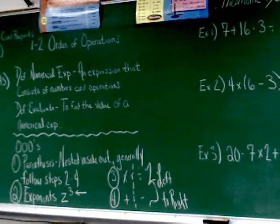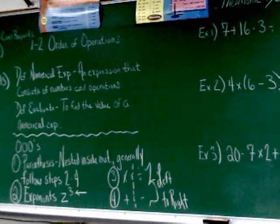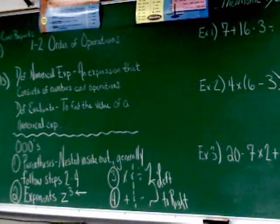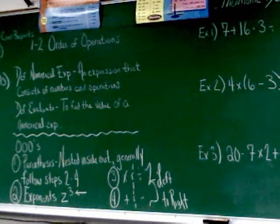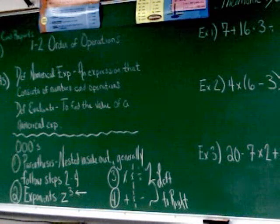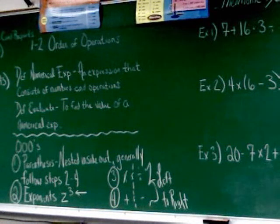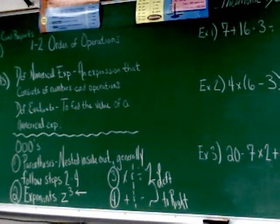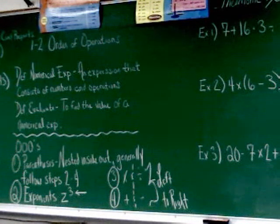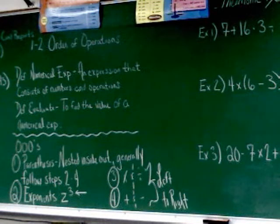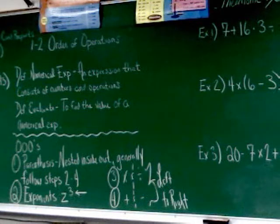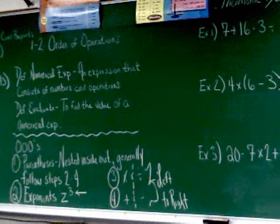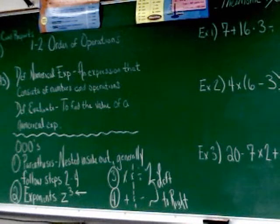Again, the order of operations in order. Step one is the order of operations. We do nested parentheses inside out. Again, nested parentheses are just parentheses that's inside another set of parentheses. Otherwise, they follow steps two to four. Step two is to take care of exponents. Step three is to multiply and divide left to right. Step four is to add and subtract left to right.